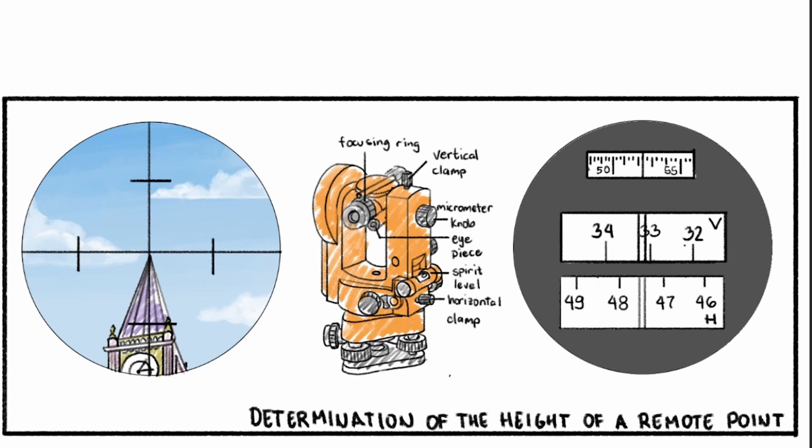Next, you're gonna look through the eyepiece next to the scope and see something like the image on the right. This could look different depending on the type of theodolite you are using. And this is the micrometer scale that I mentioned earlier. On the scale, you might see letters V and H. V signifies the vertical angle and H signifies the horizontal angle. Since we are getting the height of a point, the scale for V is what we need.